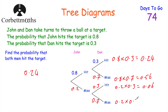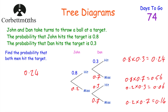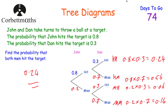And finally, miss-miss is 0.2 × 0.7 = 0.14. I find it really useful when you have a tree diagram to write down all the probabilities of those outcomes by multiplying the numbers along the branches. So we have: hit-hit = 0.24, hit-miss = 0.56, miss-hit = 0.06, miss-miss = 0.14. The answer to the first question — probability that both men hit — is 0.24.